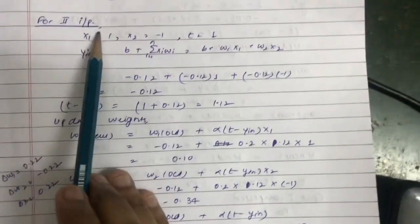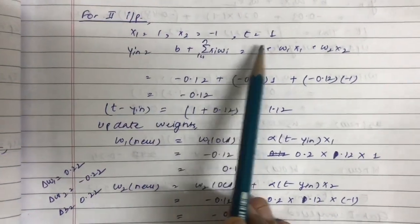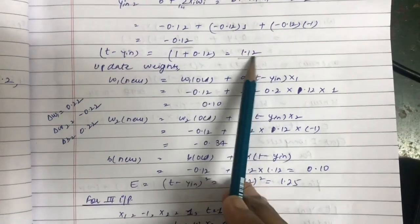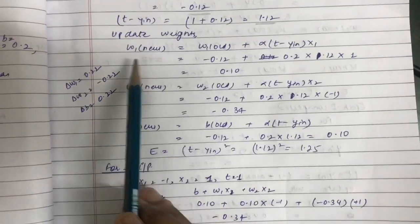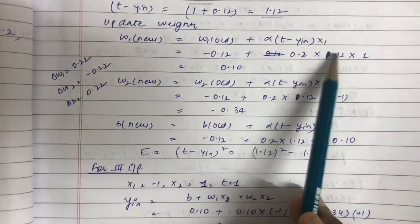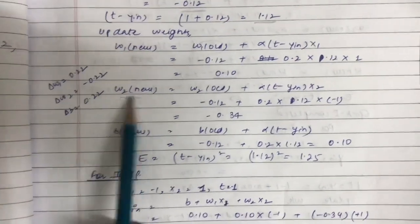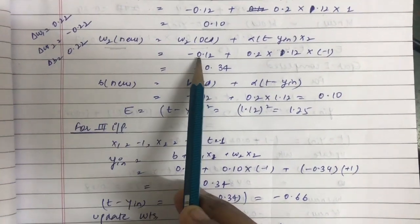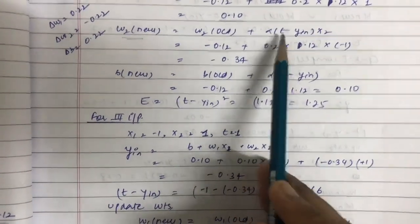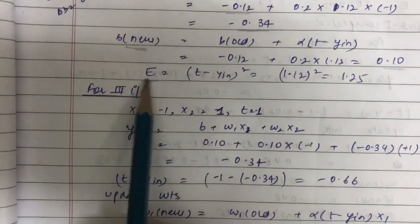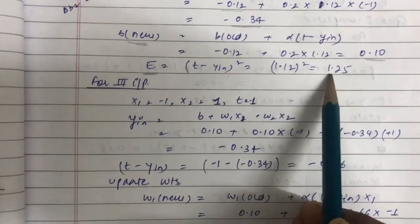For the second input: x1 = 1, x2 = −1, t = 1. y_in comes out to be −0.12. t − y_in = 1.12; since it is not zero, we apply weight and bias updates. w1(new) = −0.12 + 0.2 * (1.12) * 1 = 0.10. w2(new) = −0.12 + 0.2 * (1.12) * (−1) = −0.34. b(new) = 0.10. Mean square error = (1.12)² = 1.25.